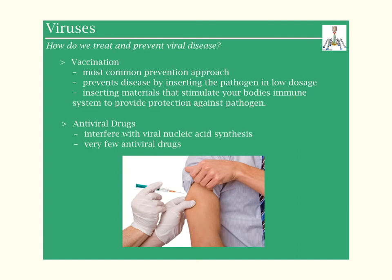So let's say we have something like measles. When you're born, you usually get something called MMR — measles, mumps, rubella — and that would be low dosages of that specific virus put into your body. Your body will recognize it, develop antibodies, and then be able to fight it off later.